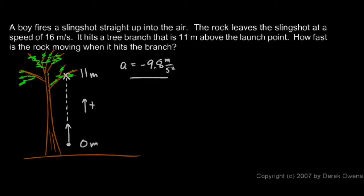So let's go ahead and write the rest of our given information up here. We know the initial position is 0 meters. We know the final position is 11 meters. And we also know the initial speed. V₀ is 16 meters per second.